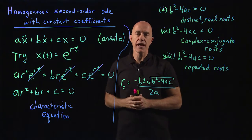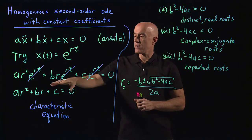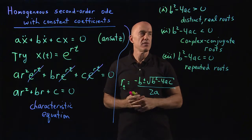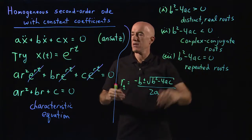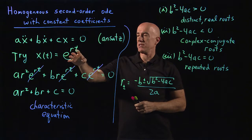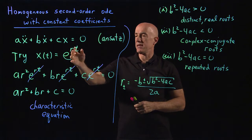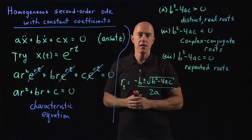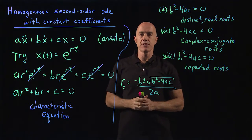Because it's a quadratic equation, one of three things can happen. We can have distinct real roots, in which case we have two exponential functions, e to the r plus t and e to the r minus t. We then apply the principle of superposition to that.